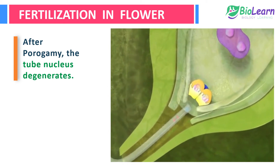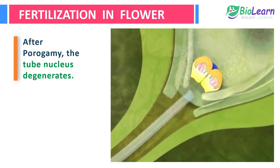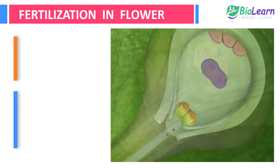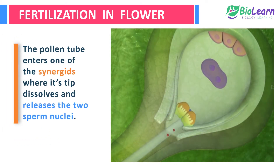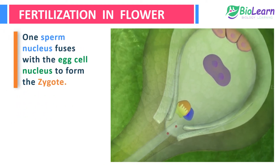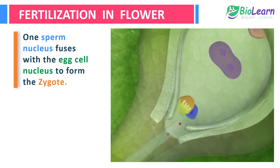After porogamy, the tube nucleus degenerates, and now the pollen tube contains only the two male gametes. The pollen tube enters one of the synergids, where its tip dissolves and releases the two sperm nuclei.